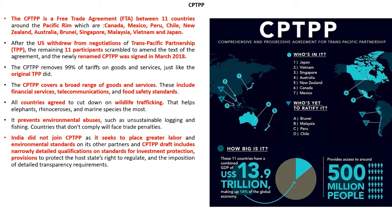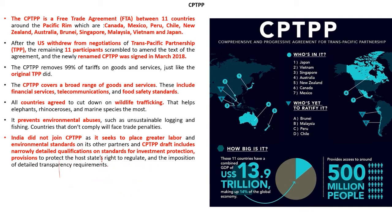The next topic is CPTPP — Comprehensive and Progressive Agreement for Trans-Pacific Partnership. It is a free trade agreement between 11 countries around the Pacific rim: Canada, Mexico, Peru, Chile, New Zealand, Australia, Brunei, Singapore, Malaysia, Vietnam, and Japan. The USA had withdrawn from the original Trans-Pacific Partnership (TPP), and the remaining 11 participants amended the text and renamed it CPTPP in March 2018.